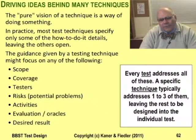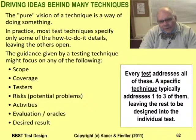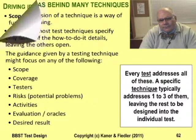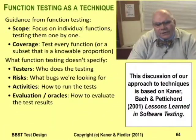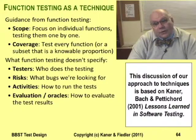Every technique provides guidance on how to design a test. In Lessons Learned in Software Testing, we tried to organize the types of guidance that techniques provide into a few categories — a few underlying ideas. Here are the definitions of seven of these underlying ideas. A typical technique is focused around one or two of these. For example, function testing is defined by its scope — the scope of function testing is one function at a time.